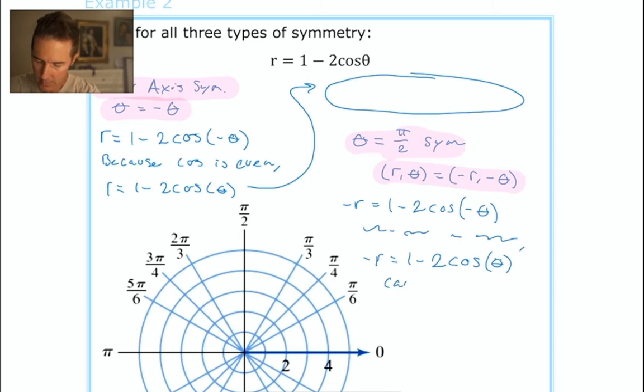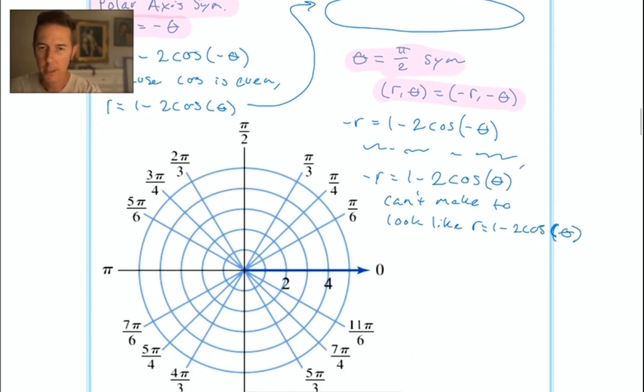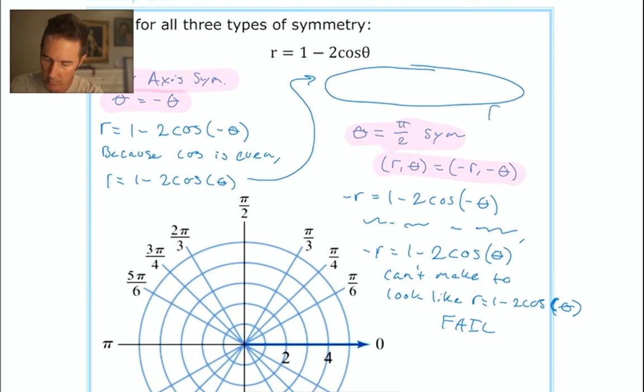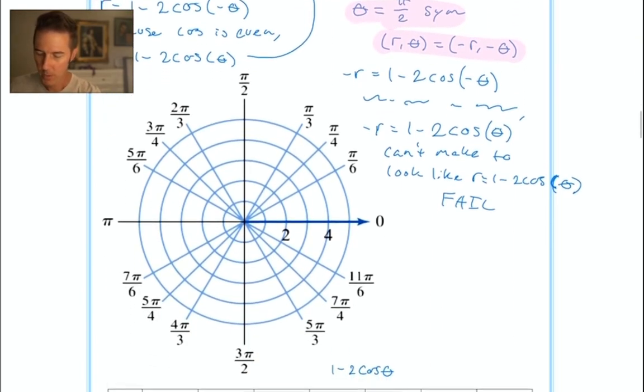Can't make it look like the original equation. Write 'fail' here, and 'pass' for the first test - whatever notation makes sense to you.